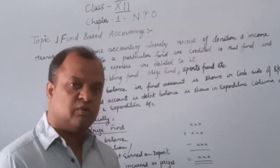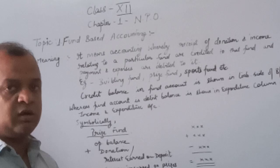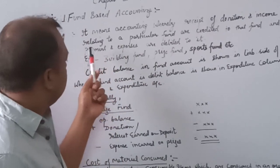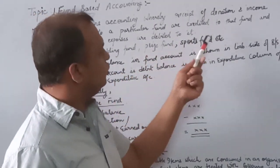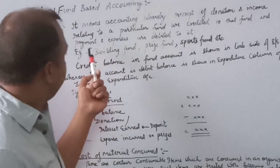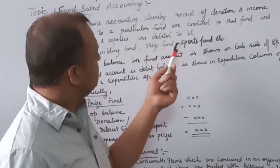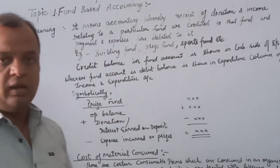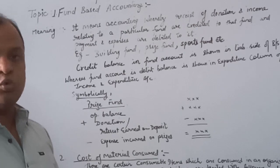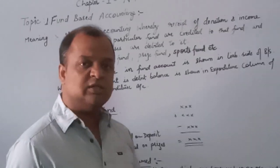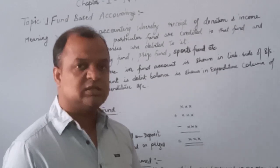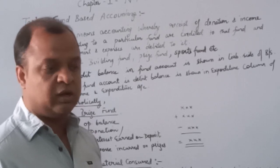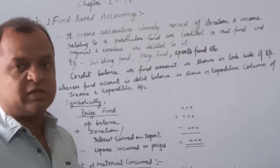Let us first discuss what is fund based accounting. It means accounting whereby the receipt of donation and income relating to a particular fund are credited to that fund account, and payment and expenses are debited to it. Basically, fund based accounting is an accounting in which a specific fund is created and that fund can be utilized only for that purpose for which the fund is being maintained. Any receipt in that fund will be added whereas any payment or expenses incurred will be subtracted from that specific fund account.